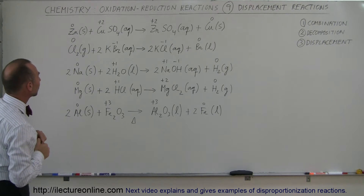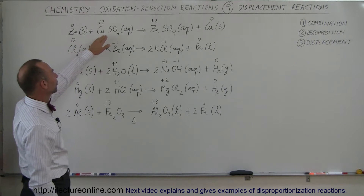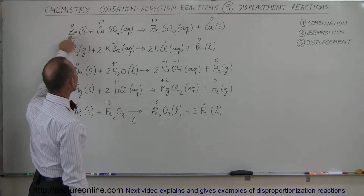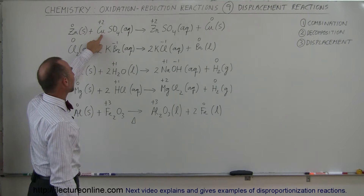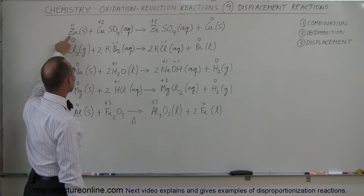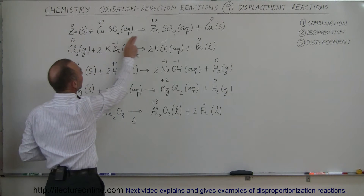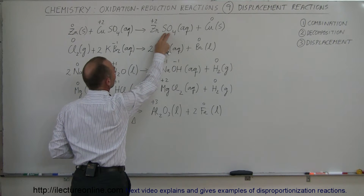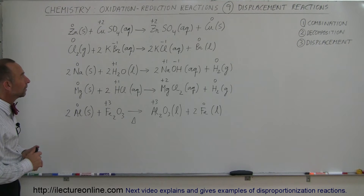Let's take a look at these examples. Here we have solid zinc and copper sulfate. It turns out that copper is more electronegative than zinc, so it's more likely to grab the electrons from zinc. That way, zinc will be oxidized and copper will be reduced. They'll switch places — zinc will now combine with the sulfate ion, and copper will then come out as a solid in the precipitate.